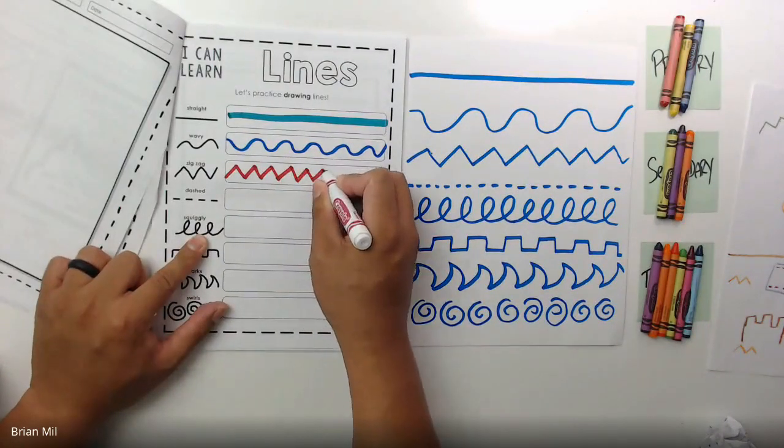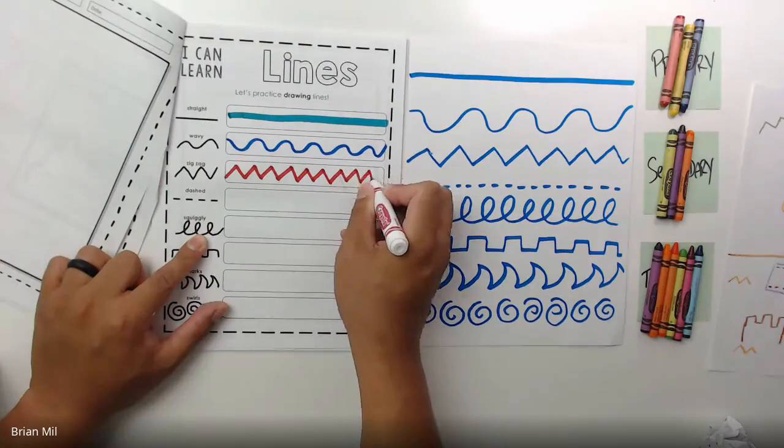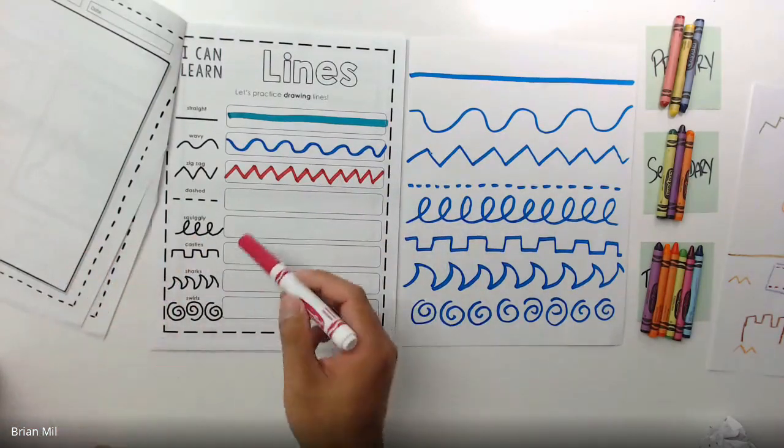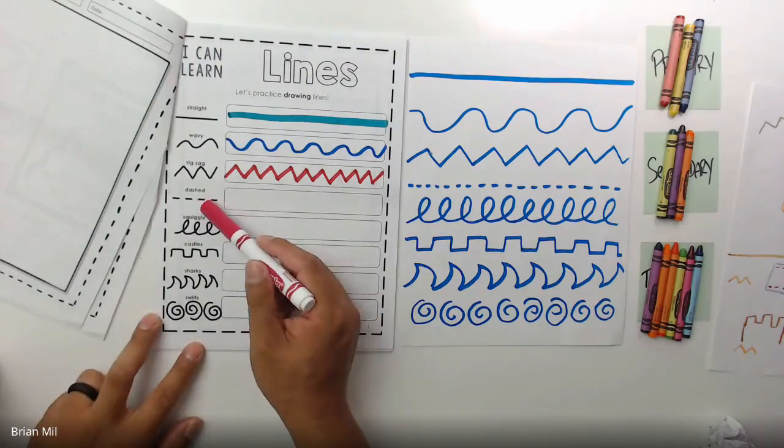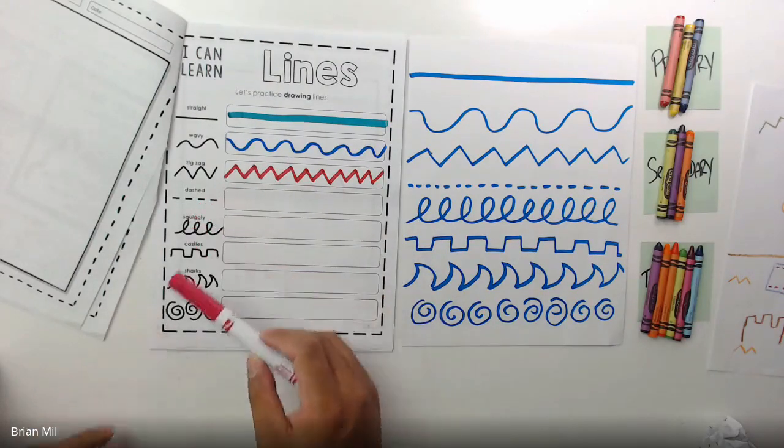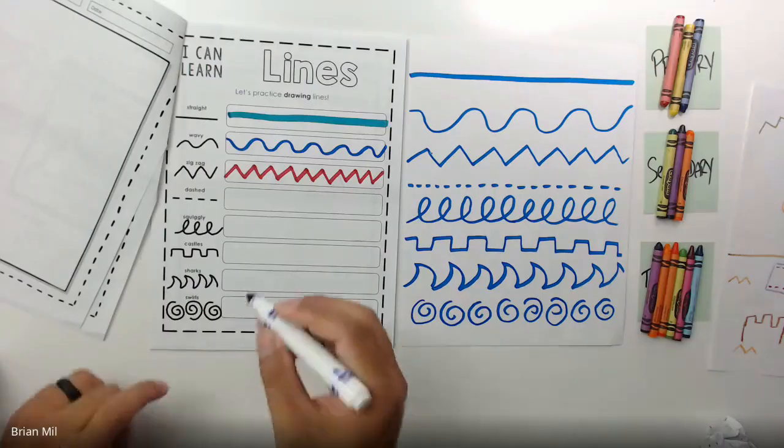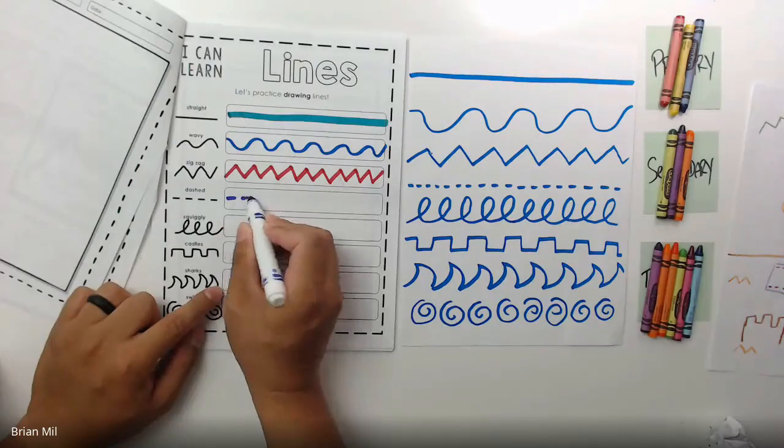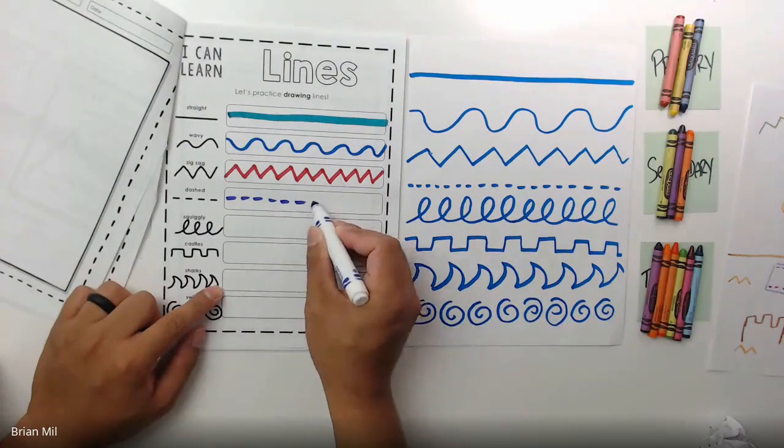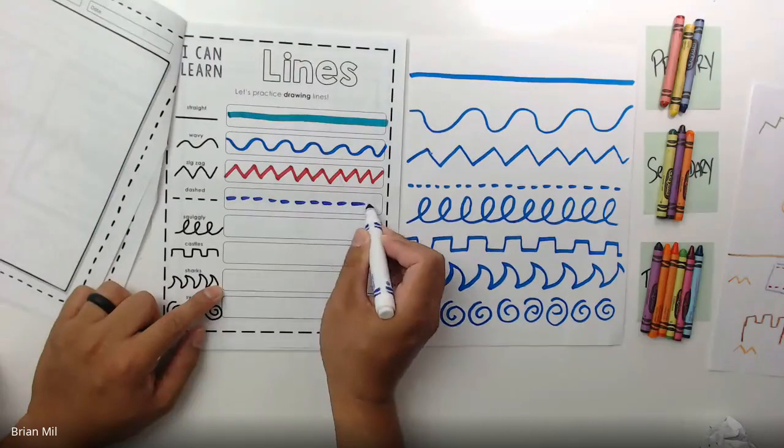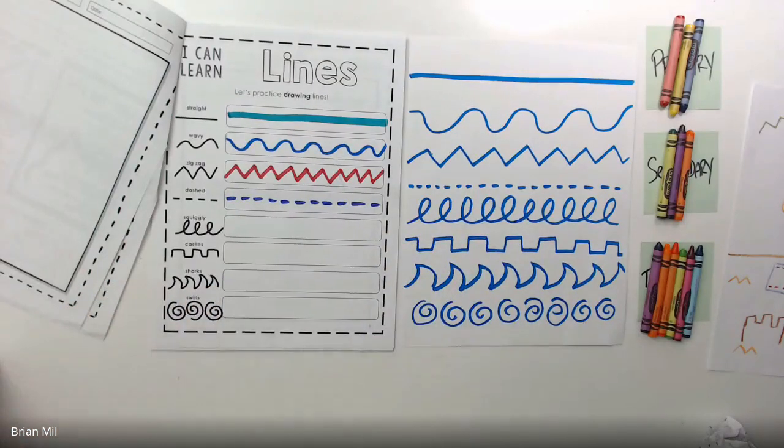Awesome job, wavy lines it is. Who could tell me what the next line is? Zigzag, good job. I appreciate you guys participating, thanks for raising your hands. Next one, this one is a little bit more confusing. What's this next line called? Dotted lines, or also known as dash lines, good job. It's kind of a straight line, I'm creating spaces in between.